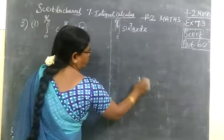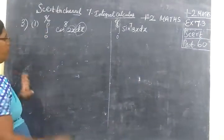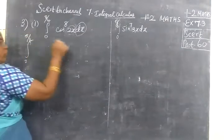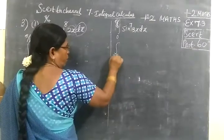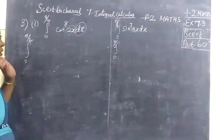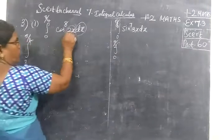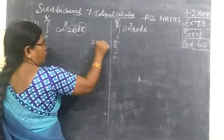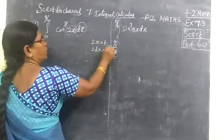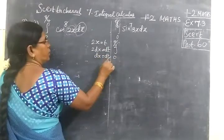Now in the last class I am learning formula, apply for an opener. Limit is 0 to π/2. In the limit 0 to π/2. After this the formula will be used for an opener. Now we get 2x equal to t. So to differentiate, 2 dx is equal to dt. So dx is equal to dt by 2.